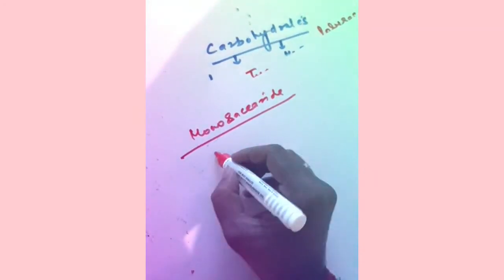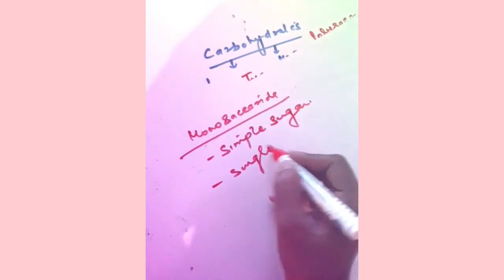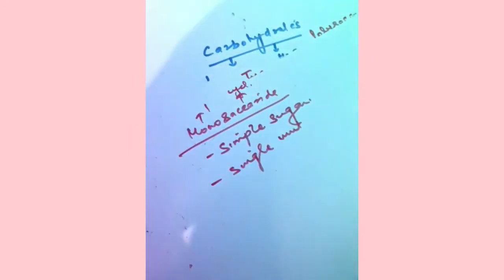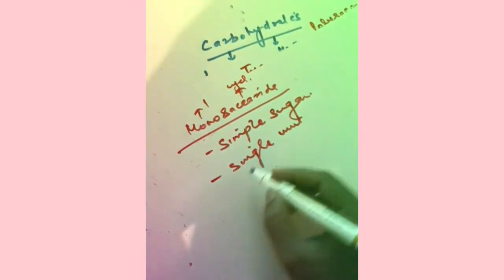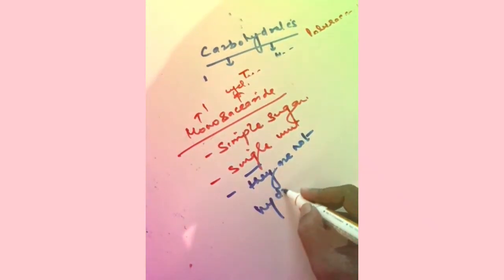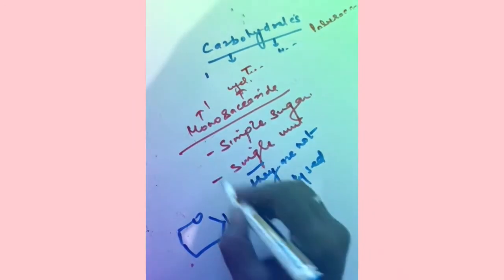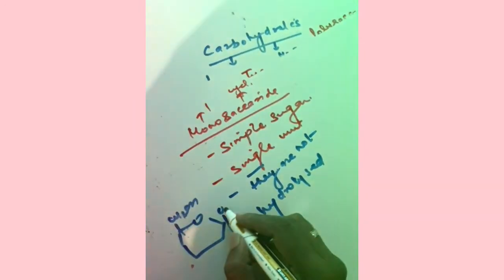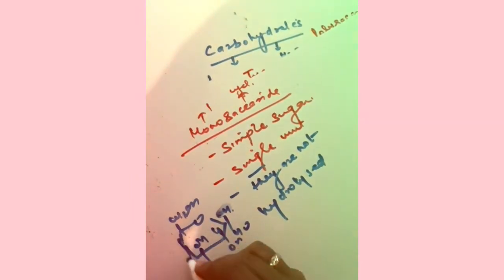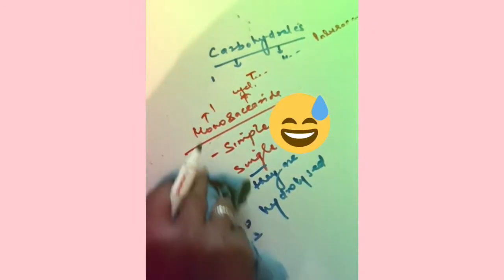First, monosaccharides — what are monosaccharides? They are simple sugars, a single unit. In monosaccharides, one cyclic ring is present. They are simple, single-unit sugars and they are not hydrolyzed further. For example, glucose is a monosaccharide — you cannot hydrolyze this molecule any further, so that is why they are not hydrolyzed.